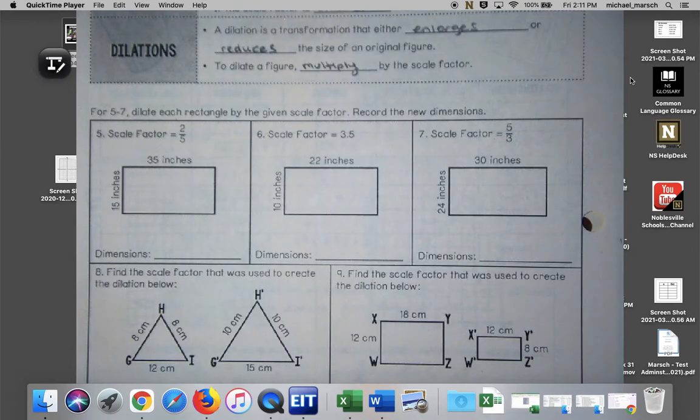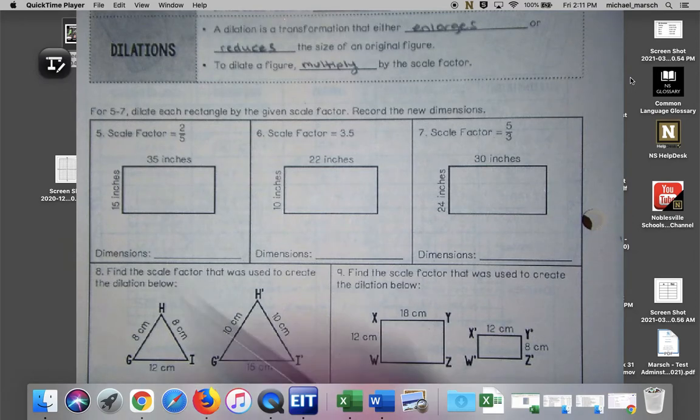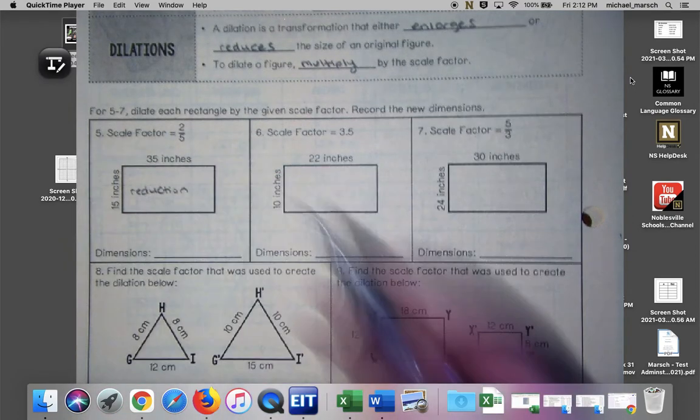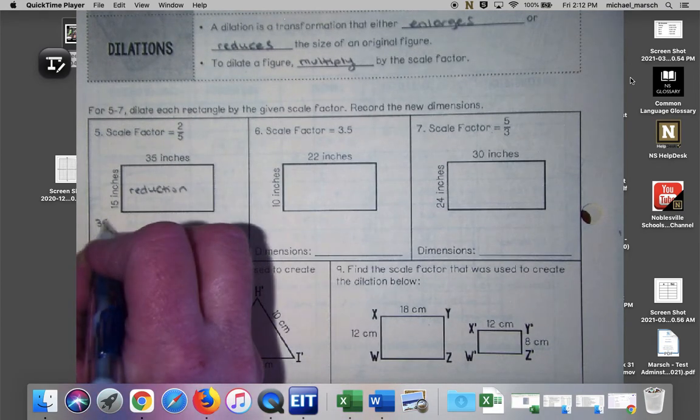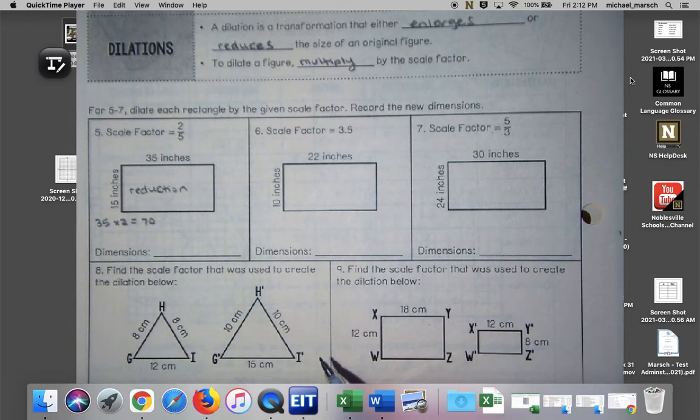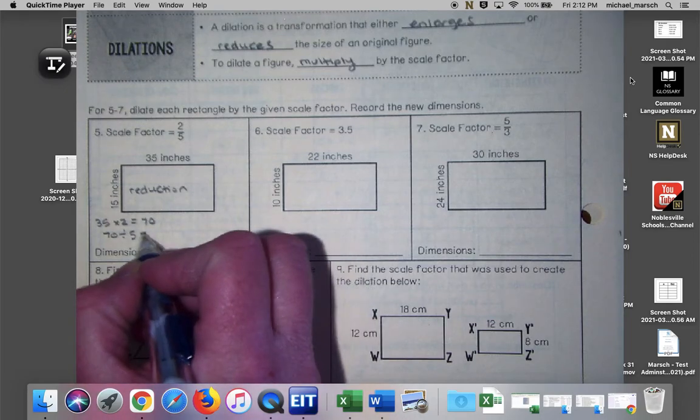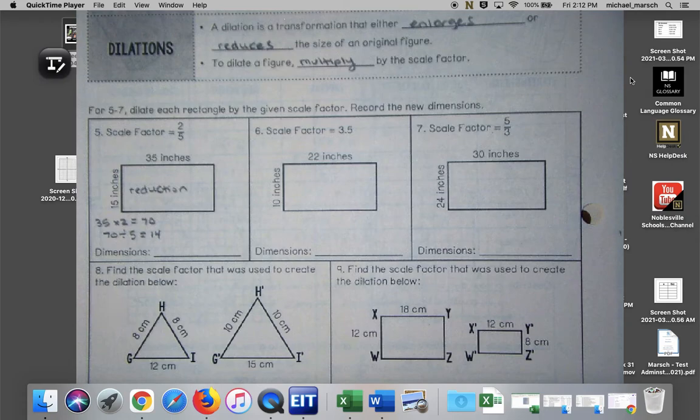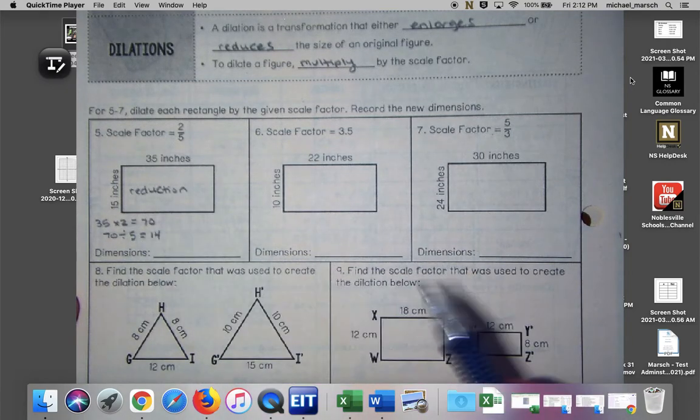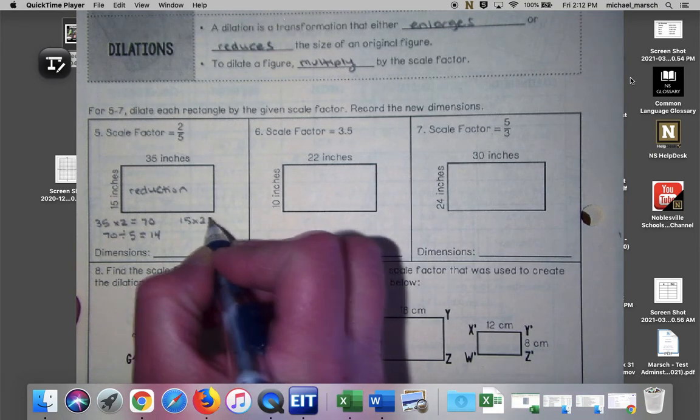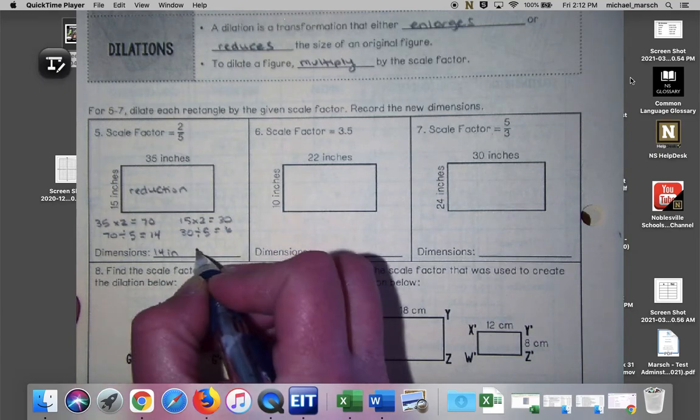So we want to dilate this by a scale factor of two fifths. So right away you should know that this is going to be what, a reduction or an enlargement? Reduction. So write reduction in here. That should tell you that our numbers should get smaller. So when I was talking about how to do two fifths times a number, we're going to do 35 times 2, we get 70, and then you take the 70 divided by 5 and you get 14. So our fraction is two fifths, so first we multiply this side length by 2 and then we divided it by 5. 15 times 2 equals 30, 30 divided by 5 equals 6. So our new dimensions are 14 inches and 6 inches.